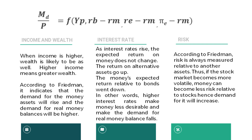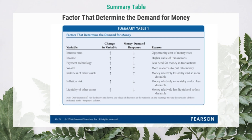Another factor that determines money demand according to Friedman is risk. According to Friedman, risk is always measured relative to another asset. If the stock market becomes more volatile, money can become less risky relative to stocks, and hence the demand for money will increase. In addition, we can see the wider view of the factors that determine the demand for money in the summary table.